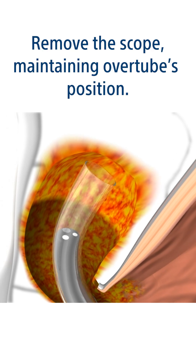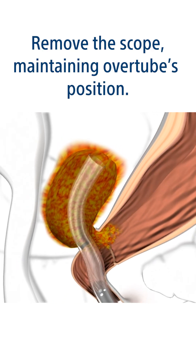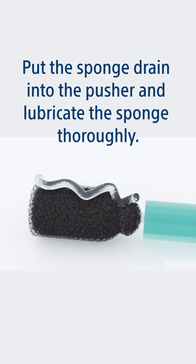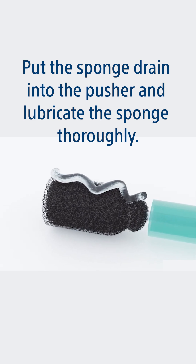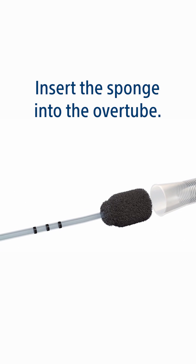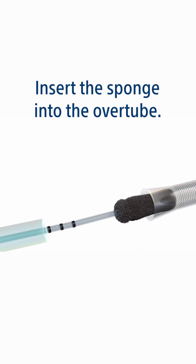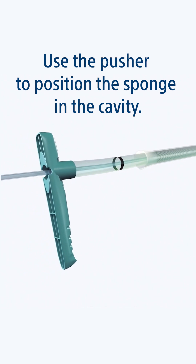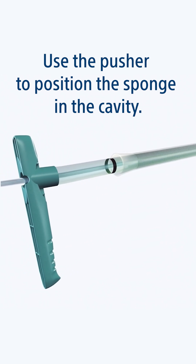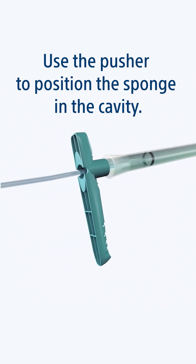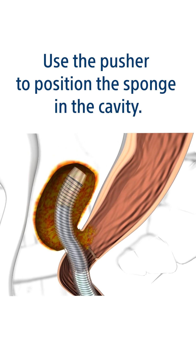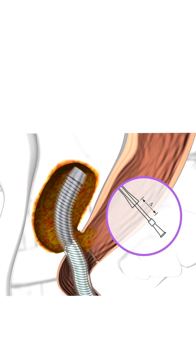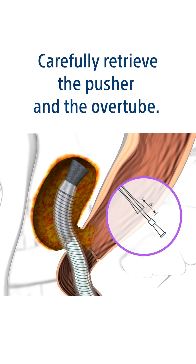Remove the scope while maintaining the over tube's position. Put the sponge drain into the pusher and lubricate the sponge thoroughly. Insert the sponge into the over tube, then use the pusher to position the sponge in the cavity. Carefully retrieve the pusher.